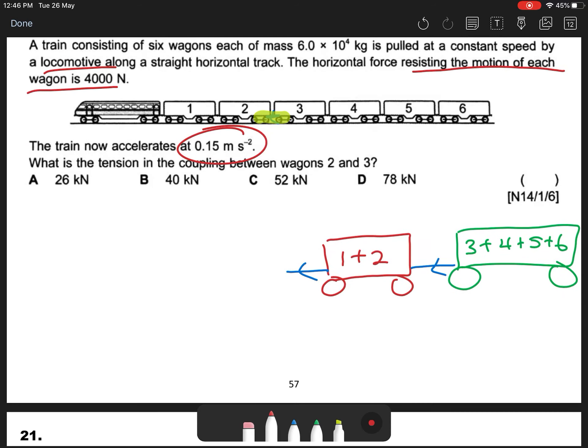Okay, so first we'll put 1, 2 combined in one group, then 3, 4, 5, 6 combined in the same way. So it's been accelerated at 0.15.